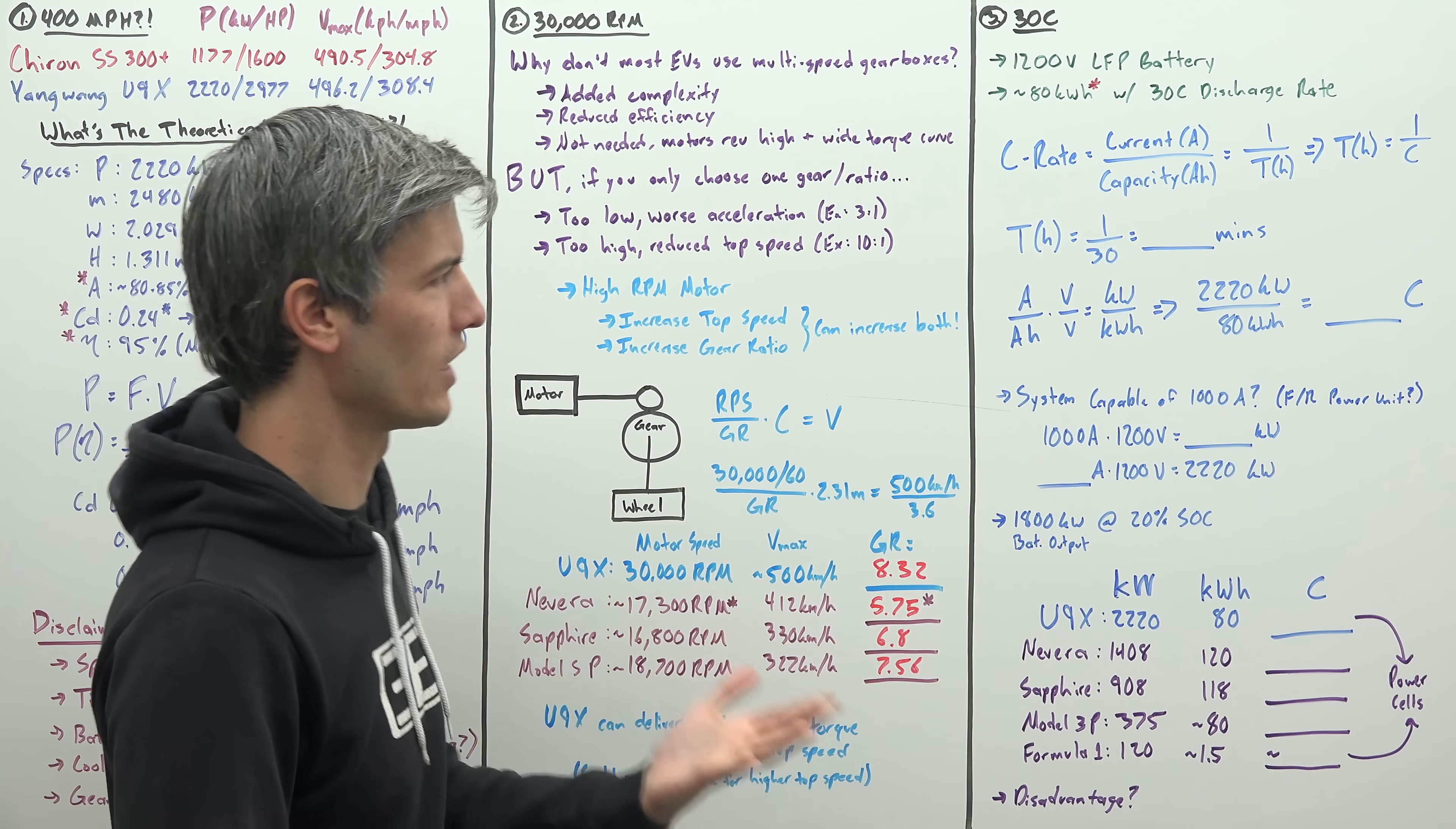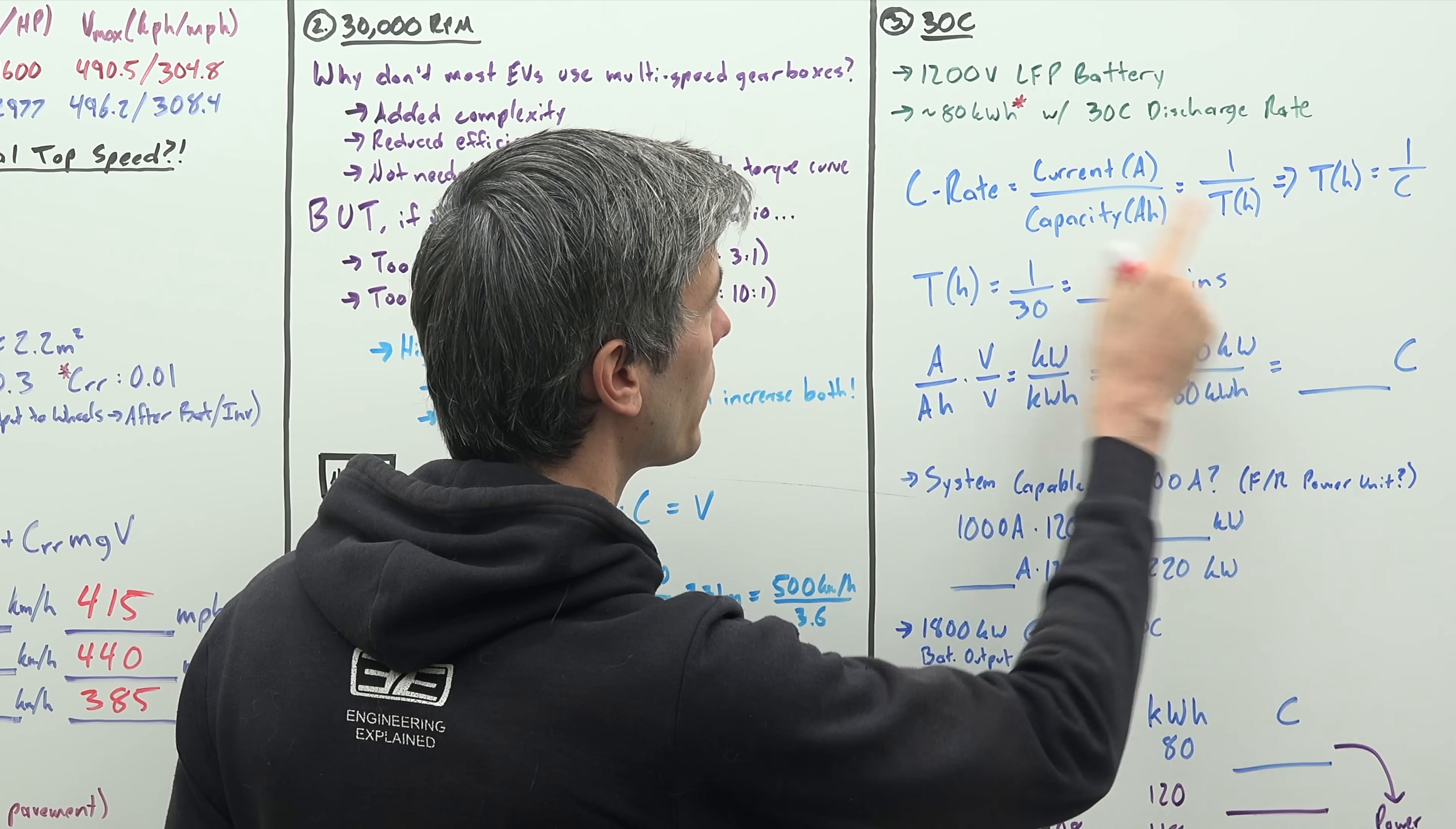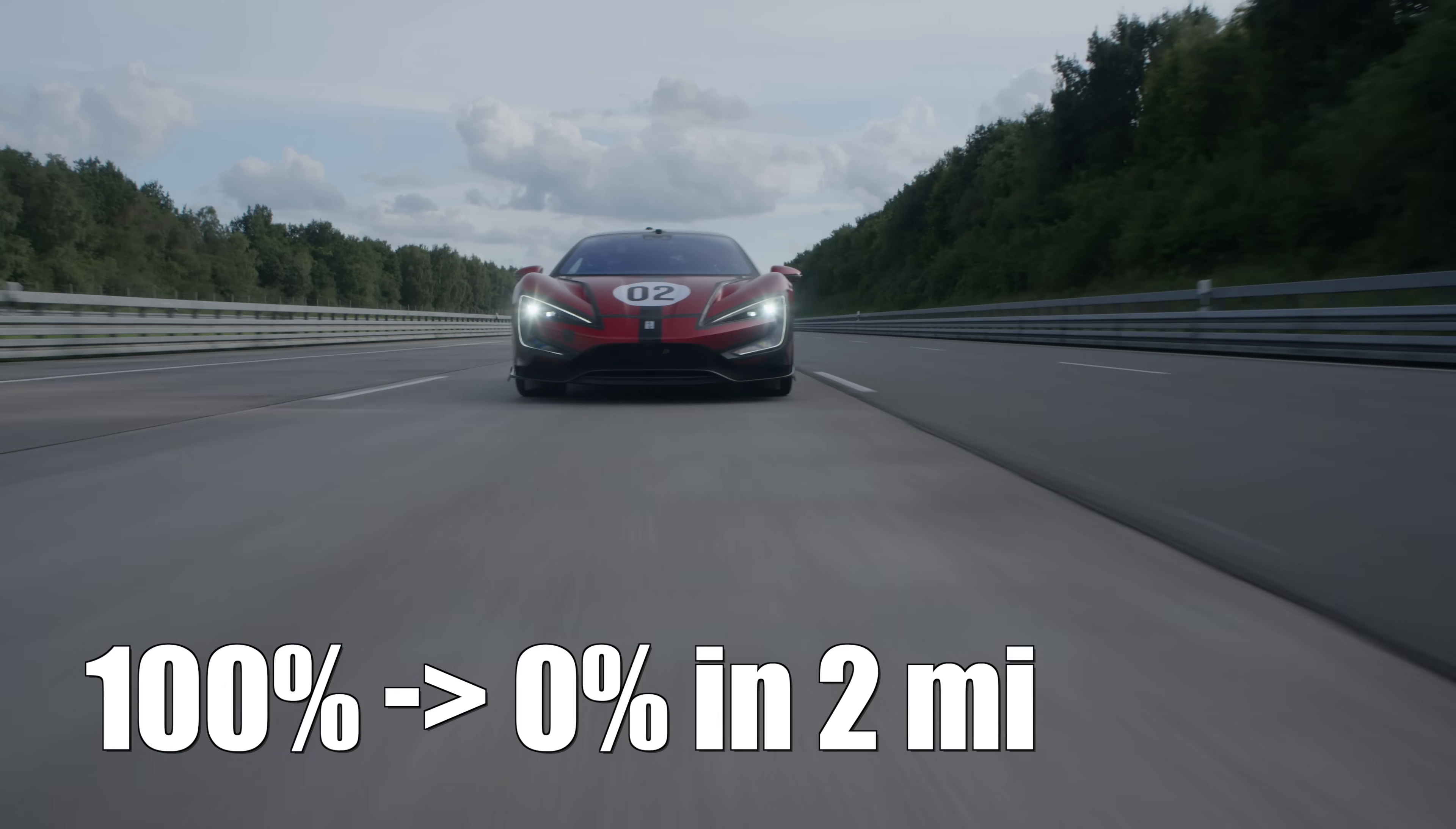So what's so crazy about a 30 C discharge rate? And for a production car, this is crazy. So C rate can be calculated as current over capacity. In other words, the amount of amps you're delivering over the amp hours that that battery pack has. Now if you're looking at amps over amp hours, you could take out the amp and say that's 1 over hours. So 1 over time. C equals 1 over time. In other words, flip that C and T around, time in hours is equal to 1 over C. So for time in hours is equal to 1 over our discharge rate of 30, that means we would be able to deplete the entire battery pack theoretically in just 2 minutes. That's how quickly this battery pack is discharging. If it were constantly delivering peak power, it could fully deplete in just 2 minutes.